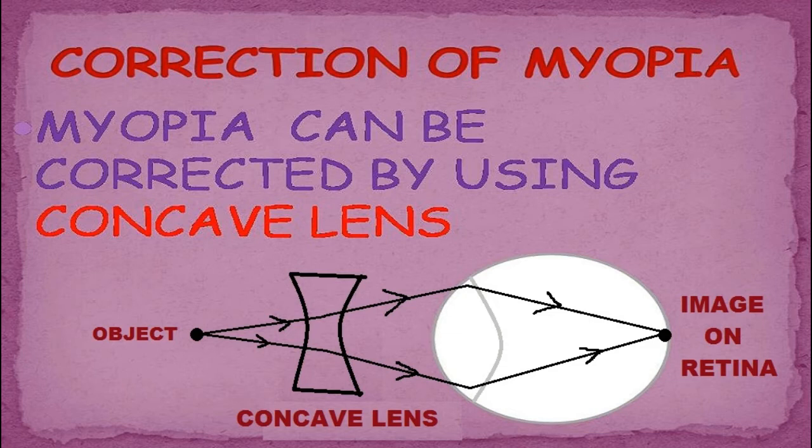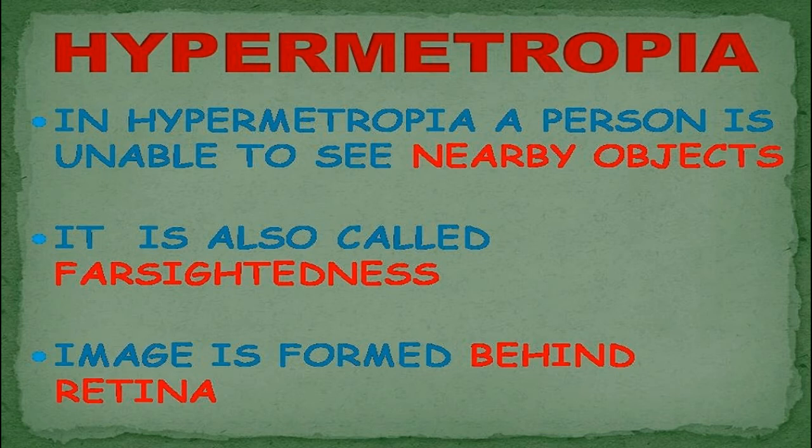A myopic eye can be corrected by using a concave lens. A concave lens is also known as a diverging lens, so it will initially diverge the light rays coming from objects, and then the converging lens of the human eye will converge them onto the retina. That's why a person can easily see far objects.